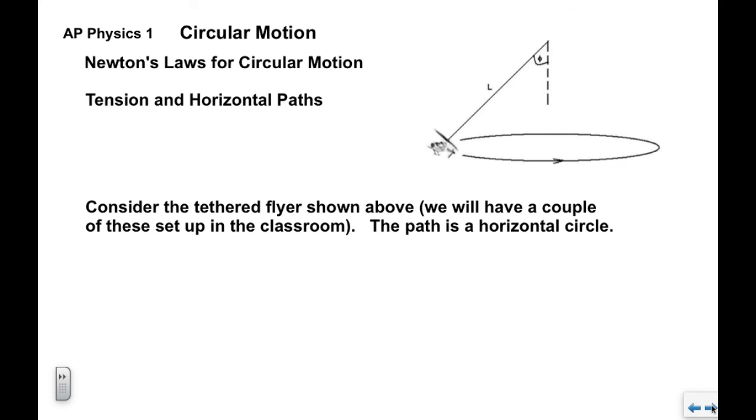Now we're going to look very quickly at tension and horizontal paths. We have what's called a tethered flyer. It's a little helicopter attached to a string, which is then attached to a clamp at the top. You'll see a couple of these set up in the classroom. The path of the helicopter is actually a horizontal circle. This is also called conical pendulum.